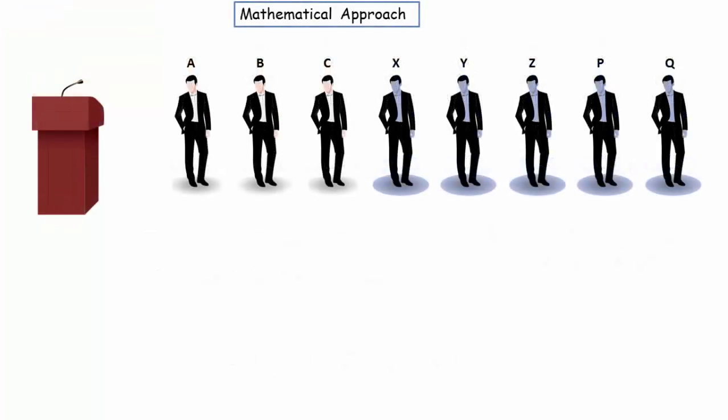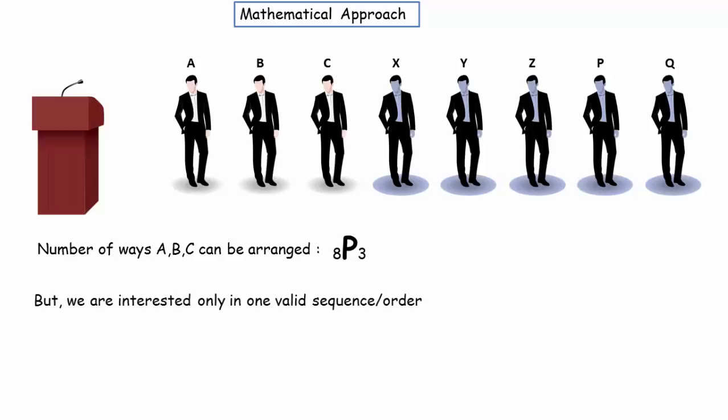Finally, the mathematical approach. Number of ways A, B and C can be arranged is 8P3. Permutation actually covers all the possible orders of A, B and C. For example, A, B, C, A, C, B, C, B, A and so on. But we are interested only in one sequence that's A speaks before B and B speaks before C.